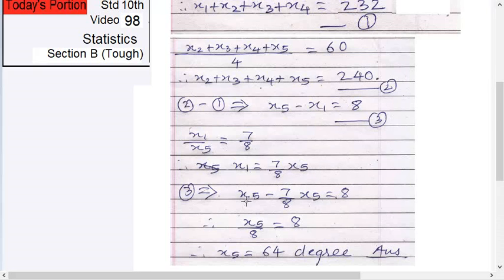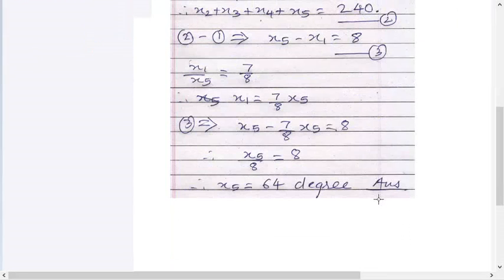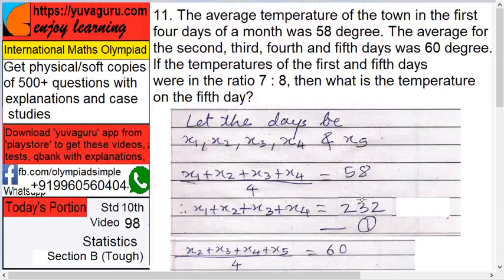Therefore X5 - 7/8 × X5 = 8. Therefore (8-7)/8 × X5 = 8, so 1/8 × X5 = 8. Therefore X5 = 64 degrees.